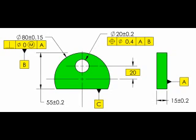Datum feature C has nothing to do with the position of the hole. Yes, the hole is shown on a center line that is perpendicular to datum feature C, so we know what the goal is.